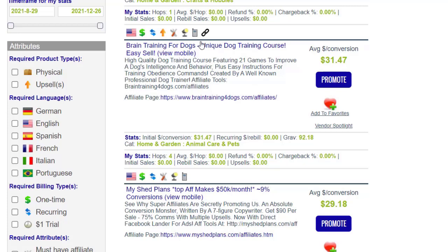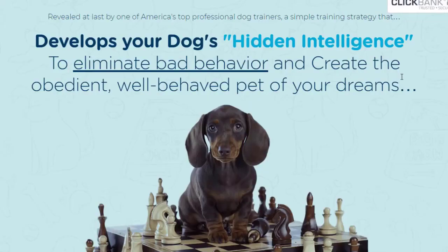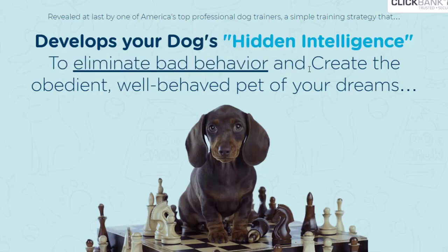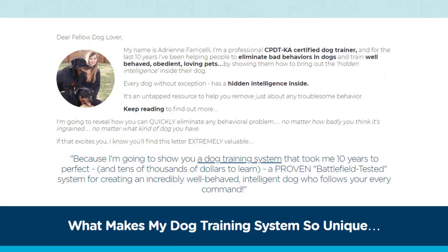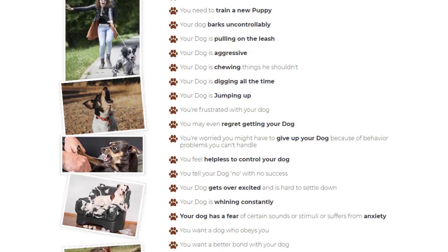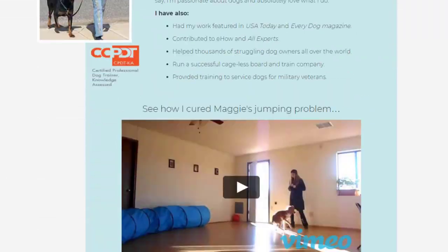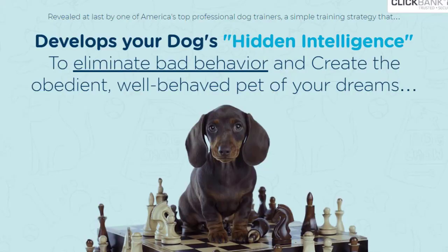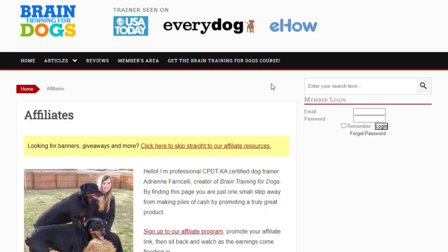Jump into the sales page. You can see the title: 'Develop your dog's hidden intelligence to eliminate bad behavior and create an obedient, well-behaved pet of your dreams.' If you scroll down, there's great information about what your dog can learn, along with videos and other content. Anyone redirected to this page will likely purchase the product.